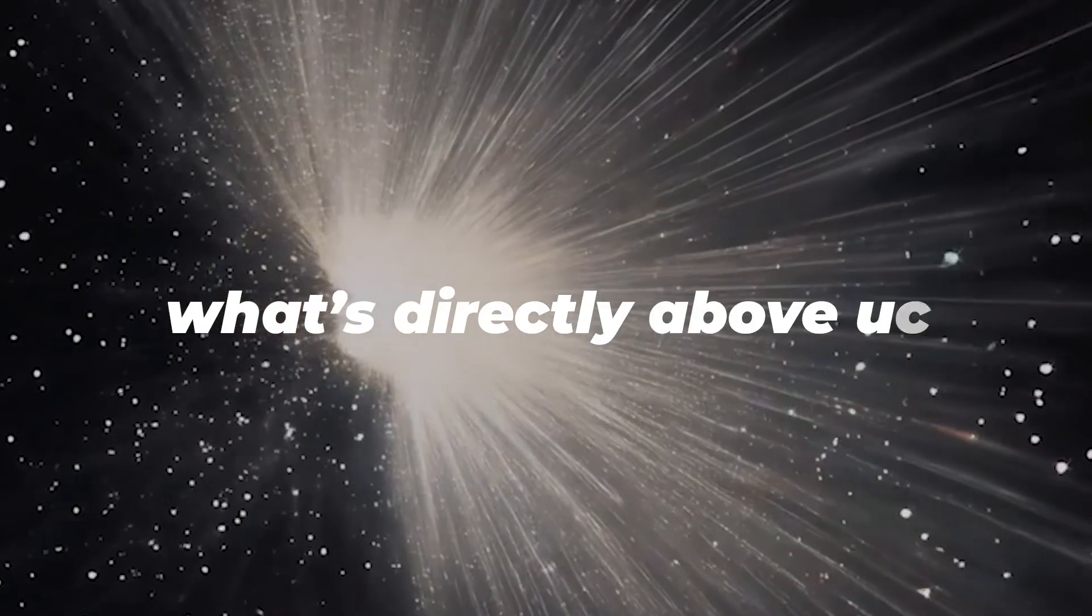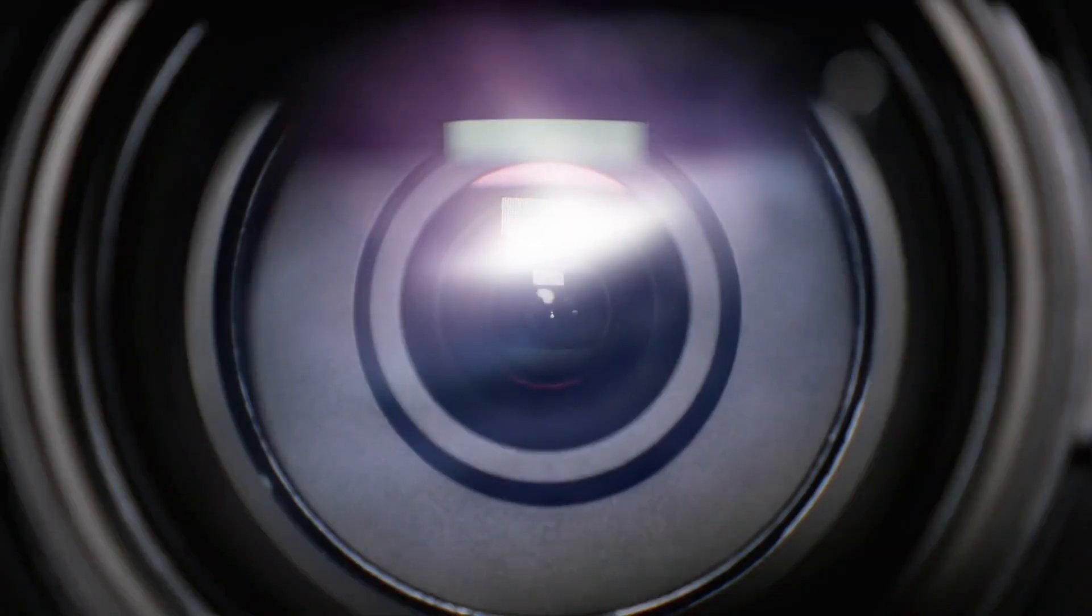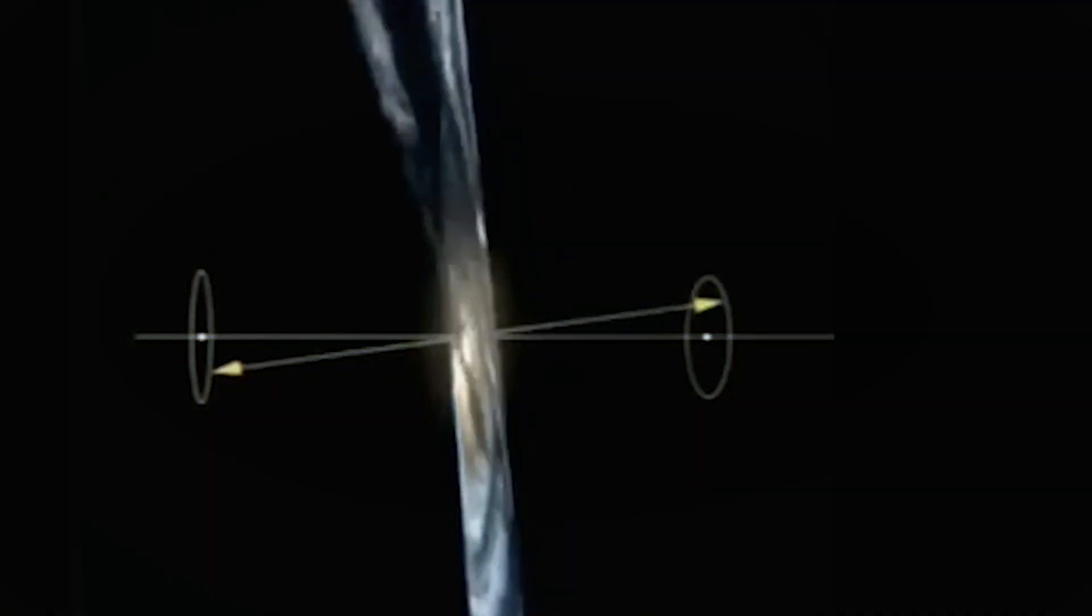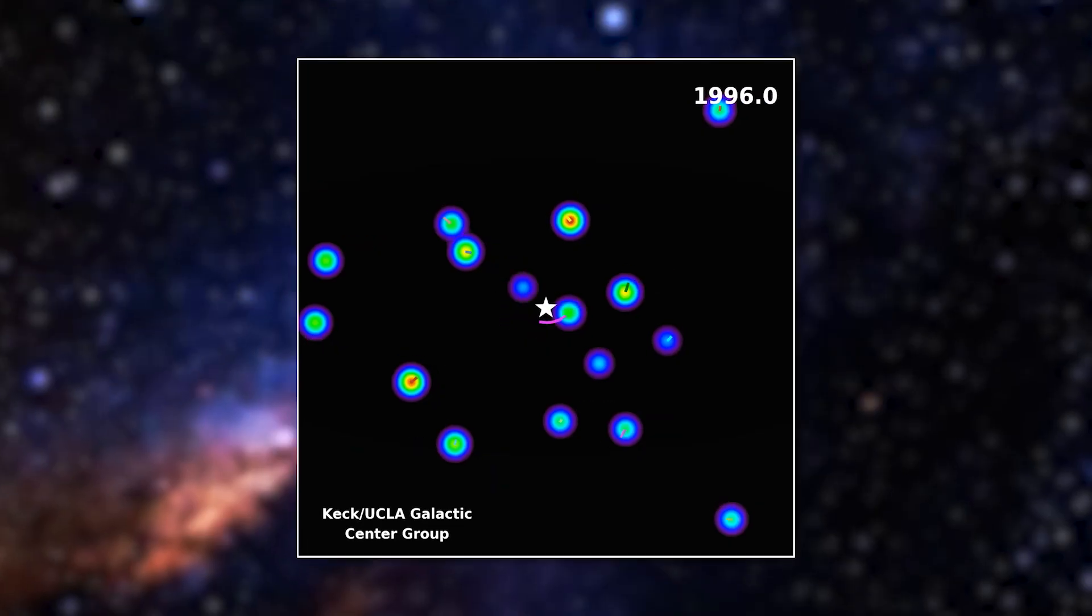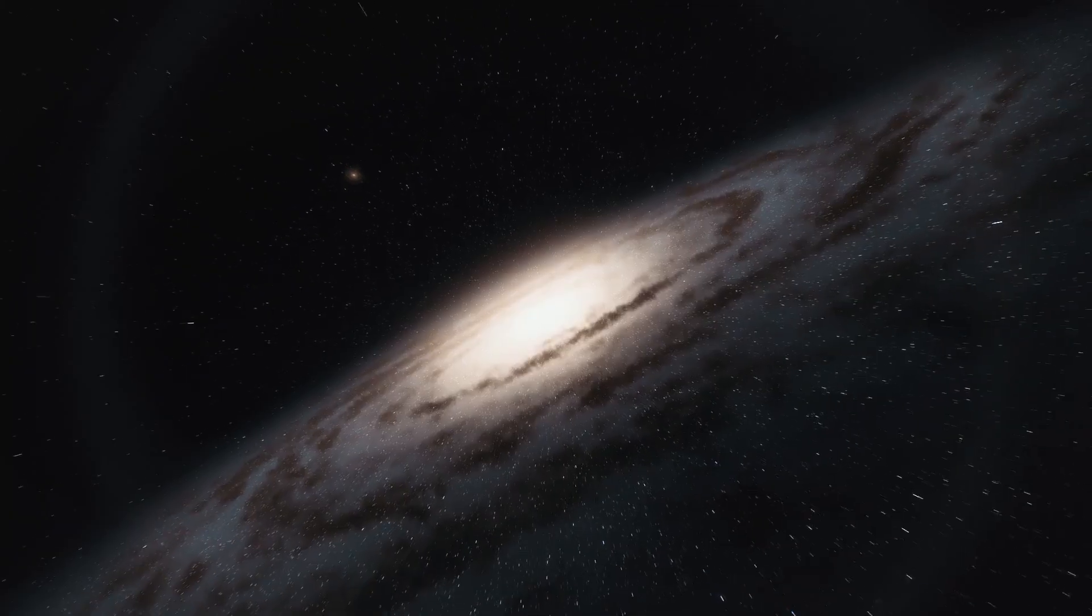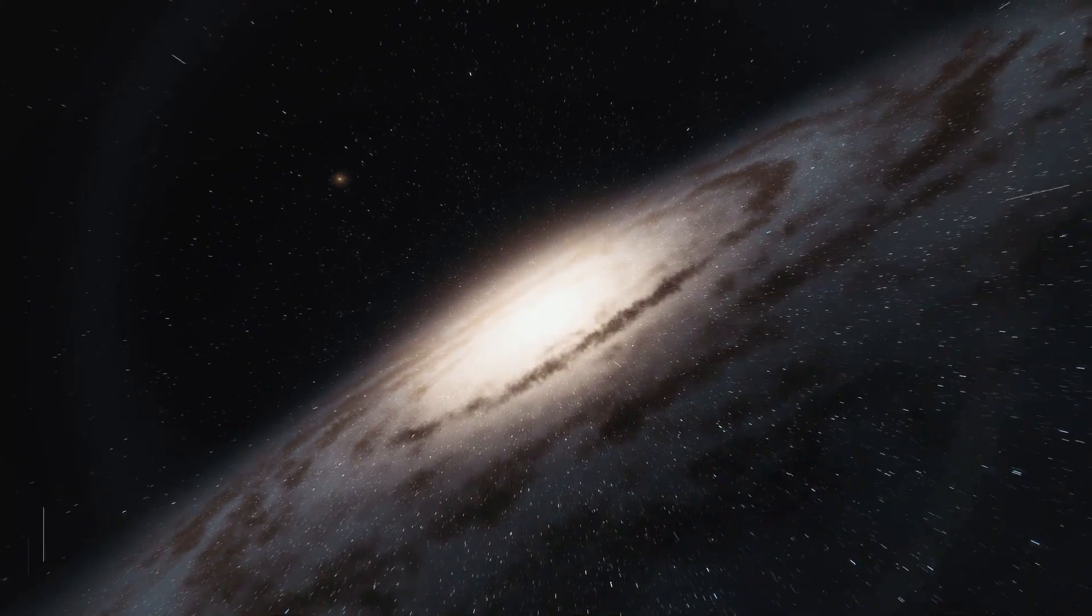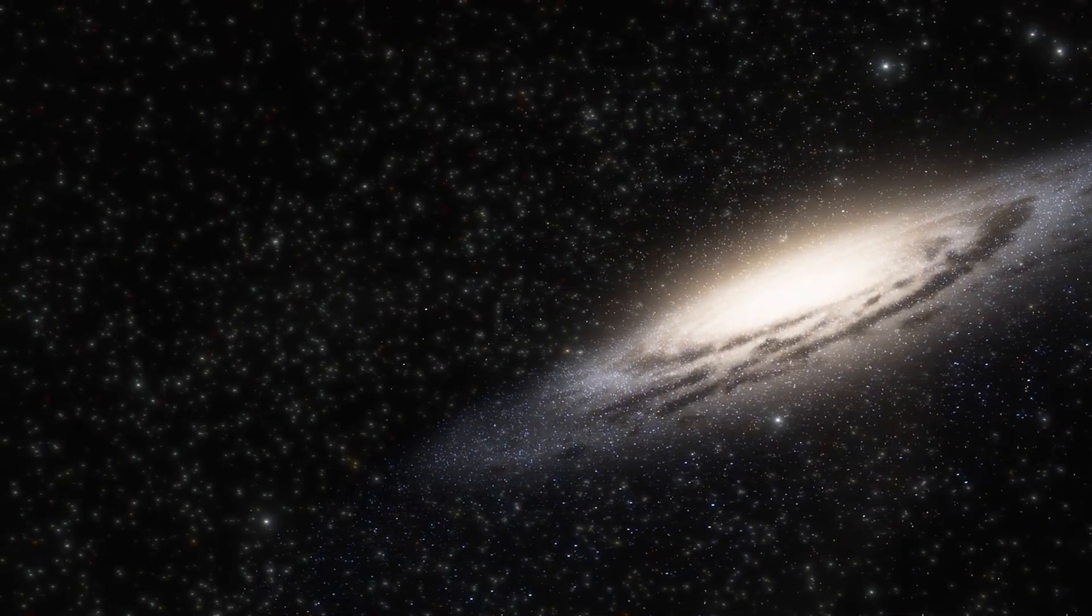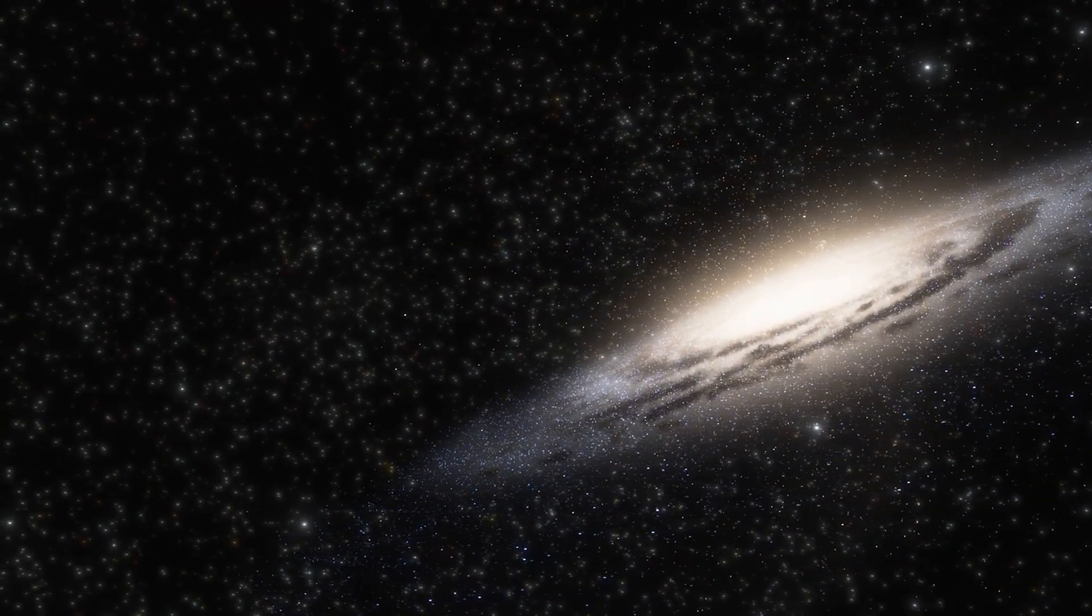Let's start with what's directly above us. When astronomers point their telescopes toward the galactic north pole, essentially straight up from our solar system, they're looking through one of the clearest windows into deep space. This direction takes us away from the crowded disk of our Milky Way galaxy, where dust and gas normally block our view. And what they found there is staggering.